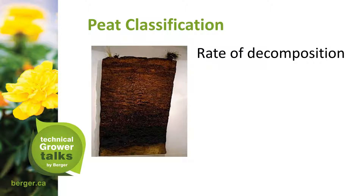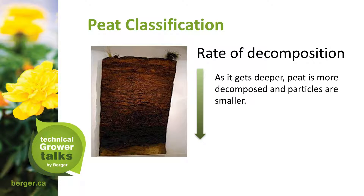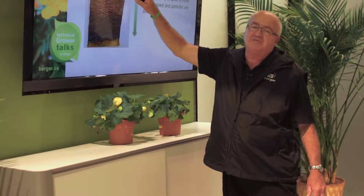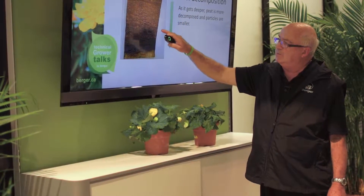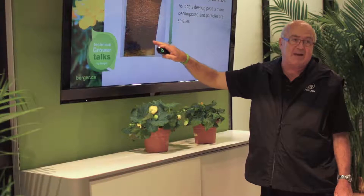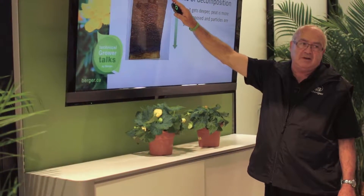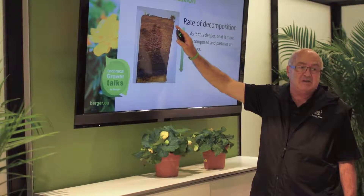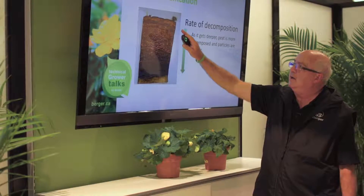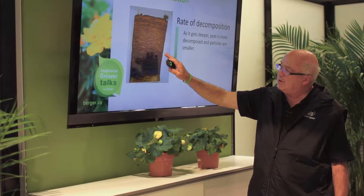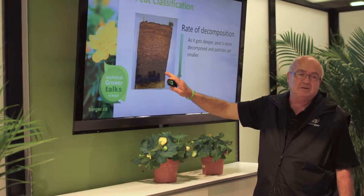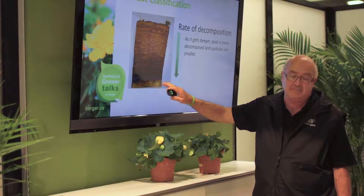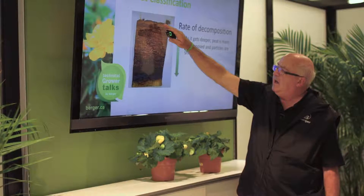Regarding rate of decomposition: as it gets deeper, peat is more decomposed and particles are smaller. We're always targeting what I call surface-active peat. The deeper you go, the more decomposed it becomes — you get into black peat. All the good qualities, like high aeration percentage, high porosity, and high CEC capability to hold nutrients, are found near the surface. As you go deeper, those qualities disappear and provide no benefit.